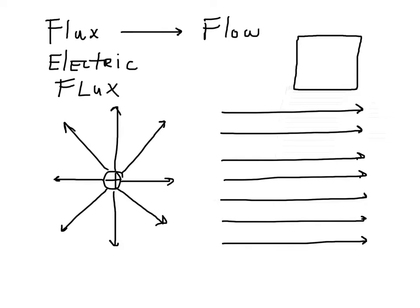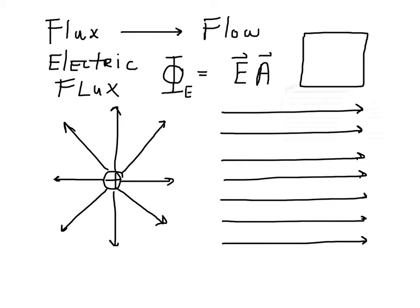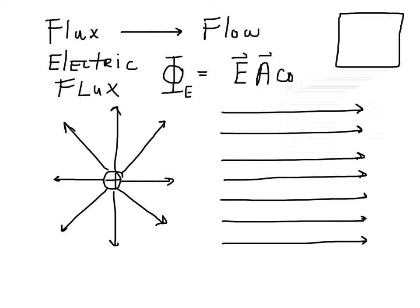When it comes to electric flux, let me show you the symbol. Electric flux is an uppercase Phi, sometimes subscripted with E for electric. It depends on the strength of the electric field, the area over which the electric field is being received, and the cosine of the angle between them — specifically the magnitudes of the field and area and the cosine of the angle between them.